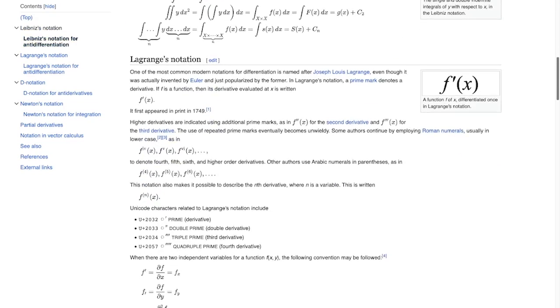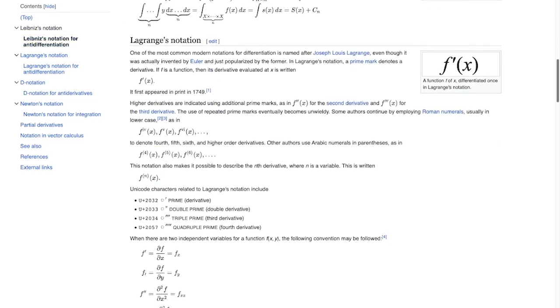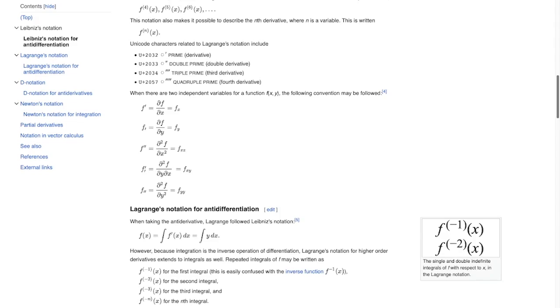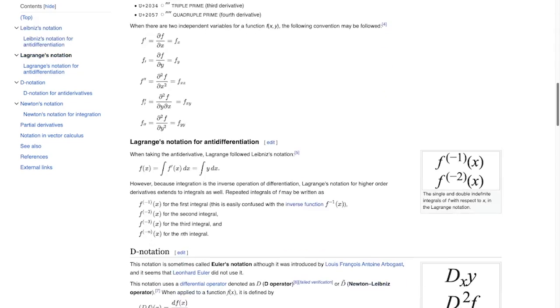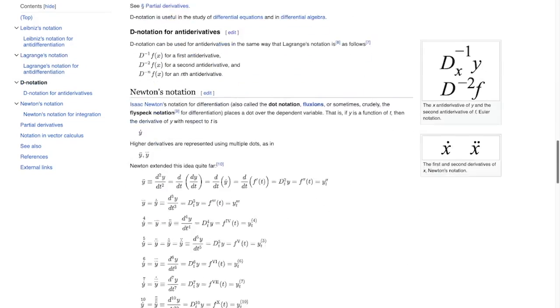And then there's what's referred to here as Lagrange's notation which I've always referred to this as Newton's notation but there is a subtle difference here. Lagrange used primes to denote derivatives and if we scroll down to see Newton's notation which is also not all that common in a first year calculus course.